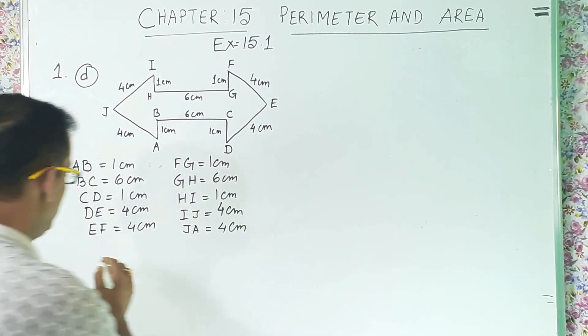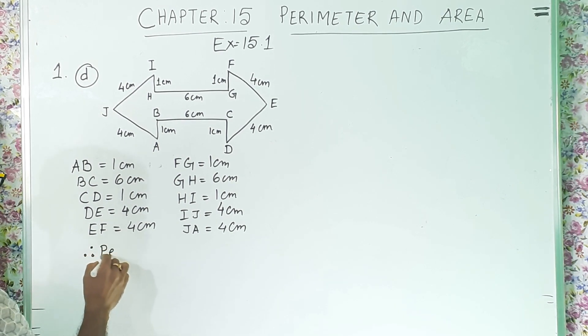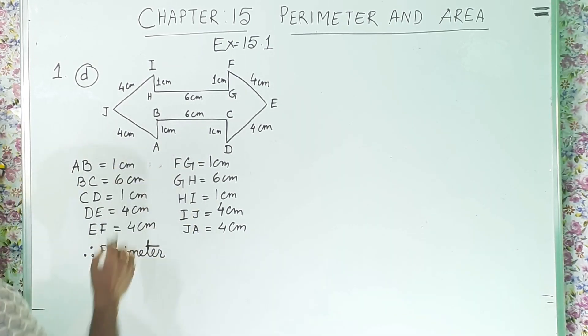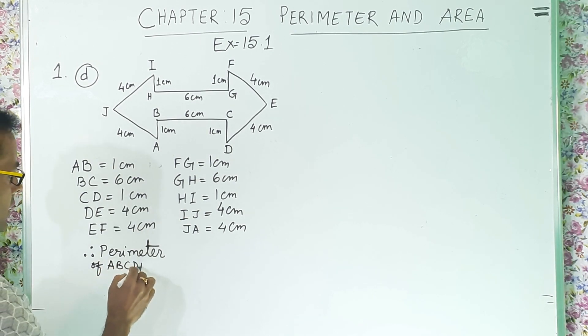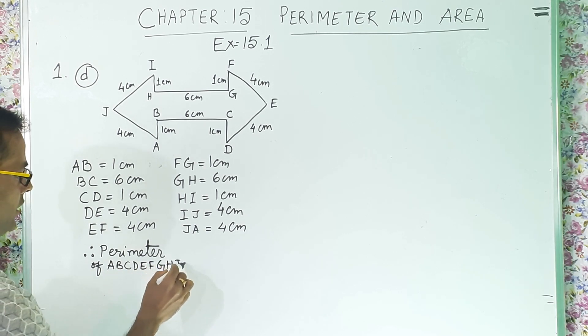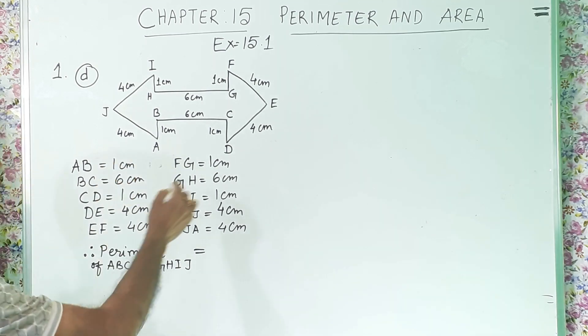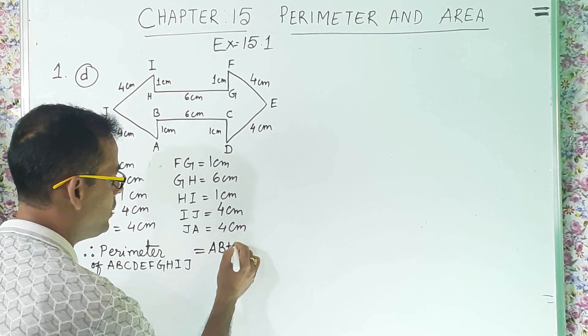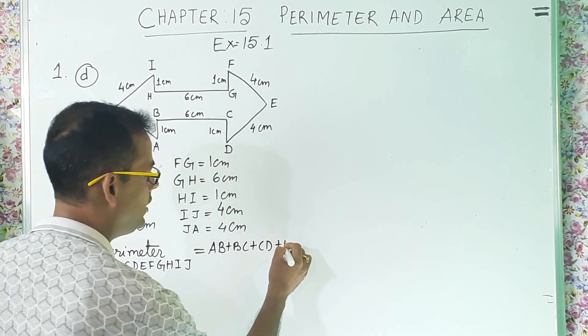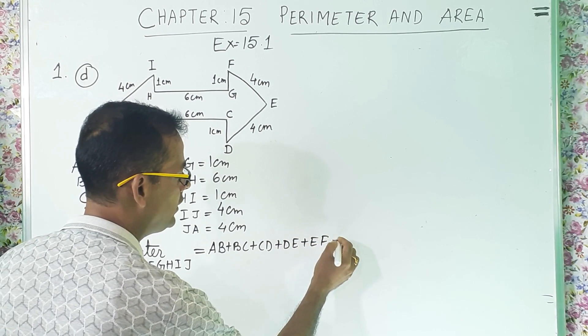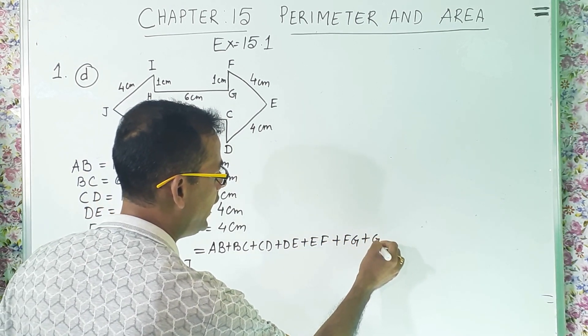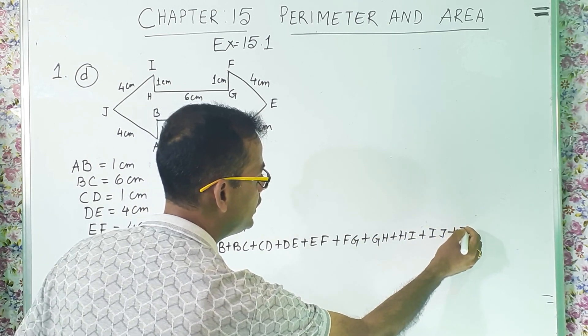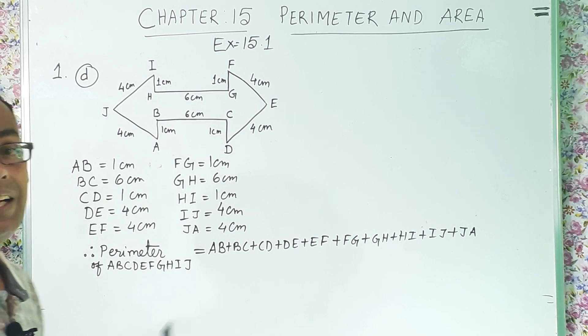So, what we will write? Therefore, perimeter of this figure, perimeter of what is the name of the figure? ABCDEFGHIJ. Equal to. Now, these all the sides, I will now add it up. So, I will write AB plus BC plus CD plus DE plus EF plus FG plus GH plus HI plus IJ plus JA. We started from A, we have ended at A only.